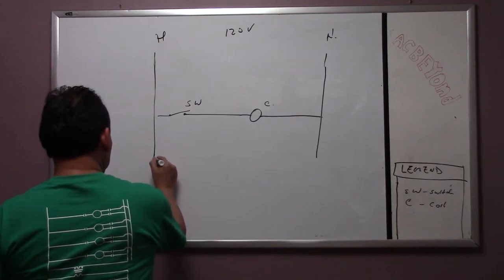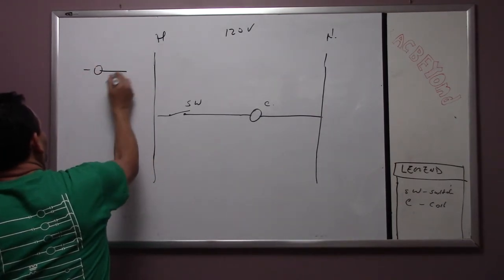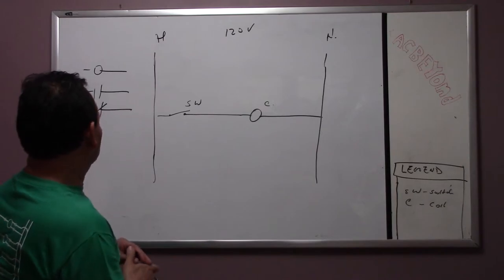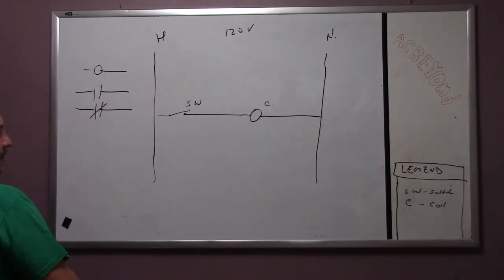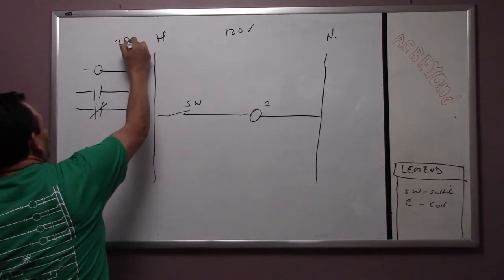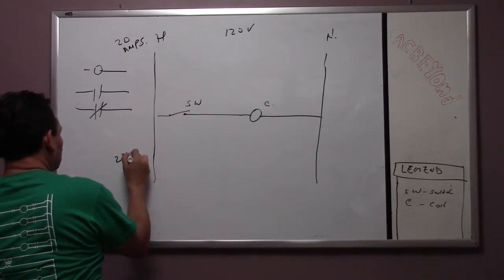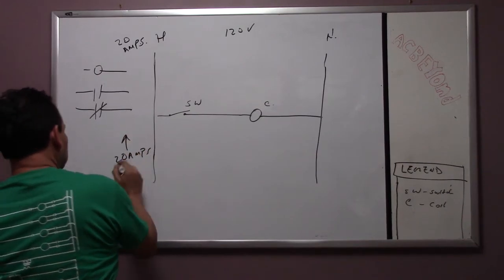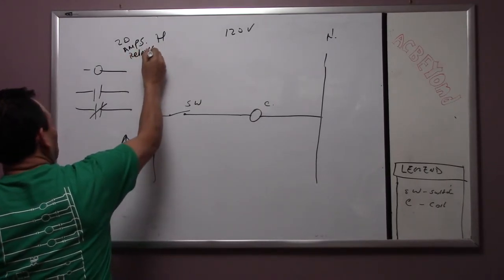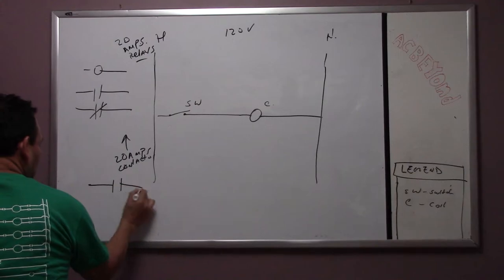A regular coil will have a set of normally open or closed contacts. It could be a relay or a contactor. The difference between a relay and a contactor is that a relay is up to 20 amps, and a contactor is above 20 amps. That's the only difference — they do the same thing.